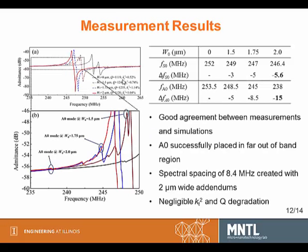Here we give the measurement results of the fabricated resonators. In the left figure, we give the admittance response. On the right table, we give the resonance shifting. By comparing the 3D simulation and the measurement, we find very good agreement. The A0 mode can be successfully placed far away from the band region. With 2-micron width of the silicon oxide block, the A0 mode shifts 15 MHz while the S0 mode shifts only 5.6 MHz, creating a large spectral spacing of 8.4 MHz between the two modes.